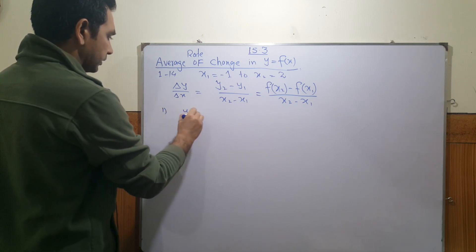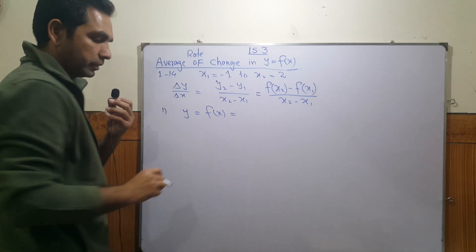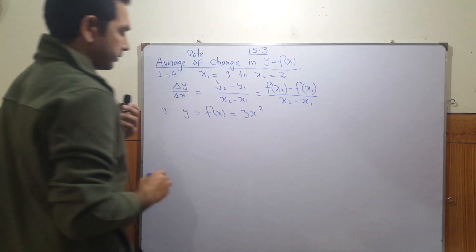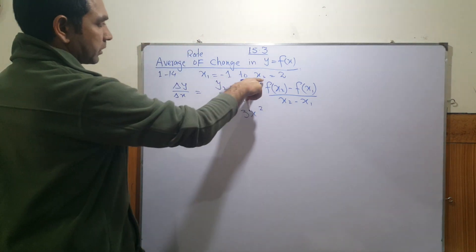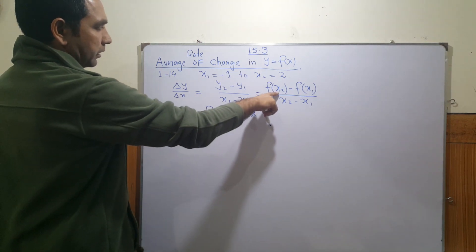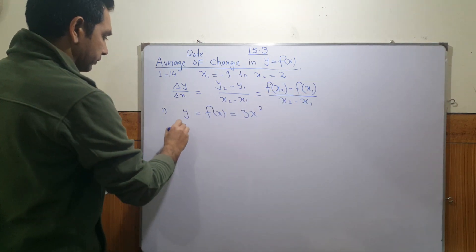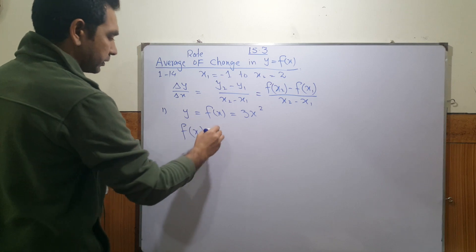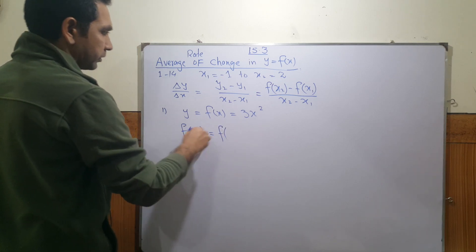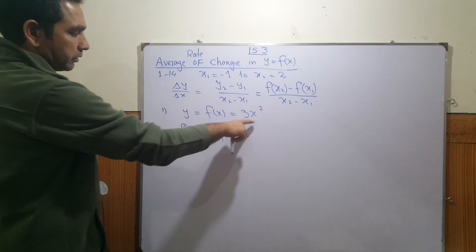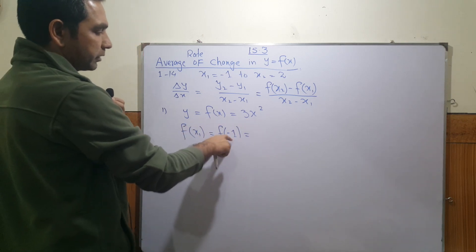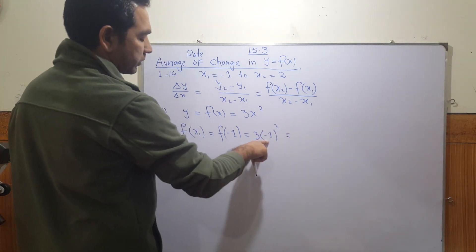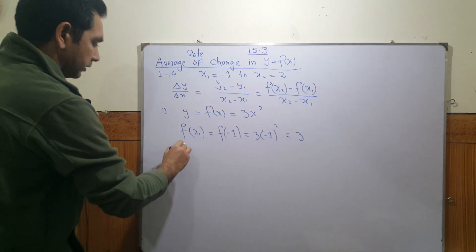The first question gives y = f(x) where f(x) = 3x². We need to find f(x₁) and f(x₂). For f(x₁), x₁ = -1, so we replace x with -1: 3 times (-1)² = 3 times 1 = 3.